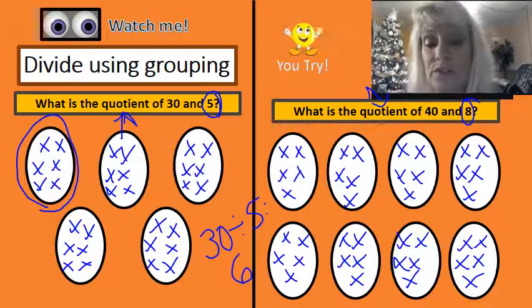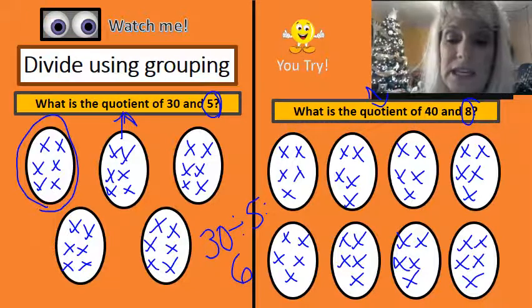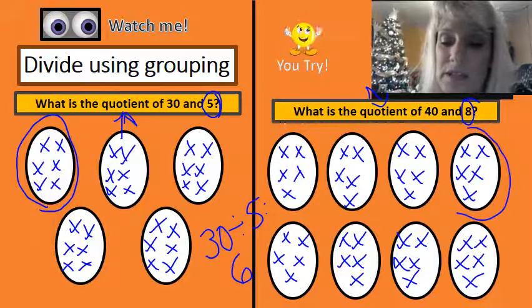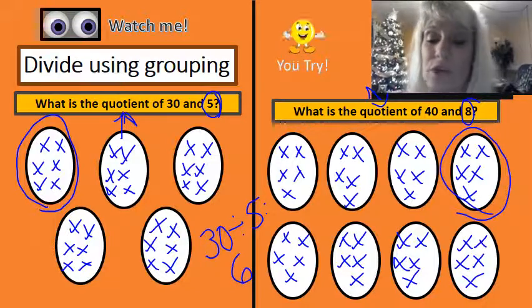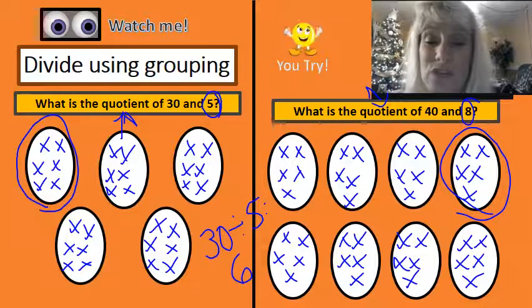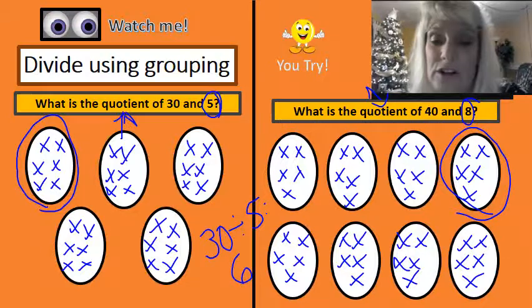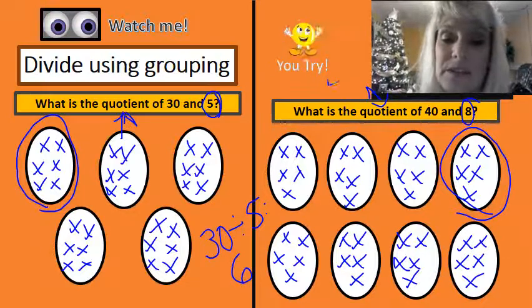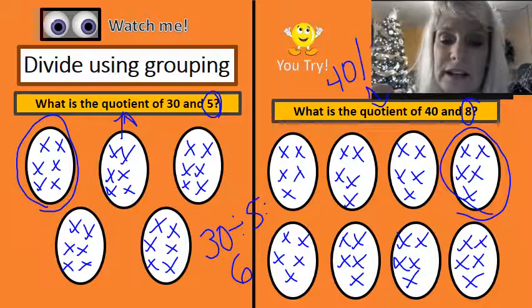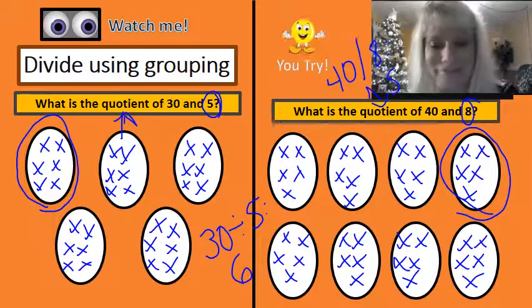So I got rid of all of those, put them in even groups. If I circle one of those groups, I see there's five there, and that tells me that 40 divided by eight equals five.